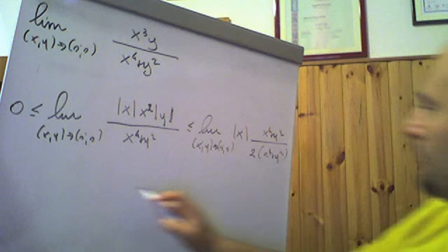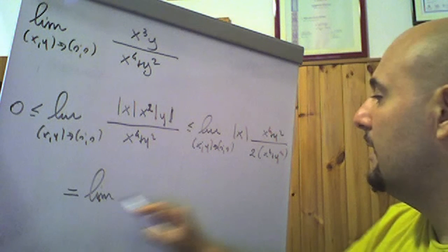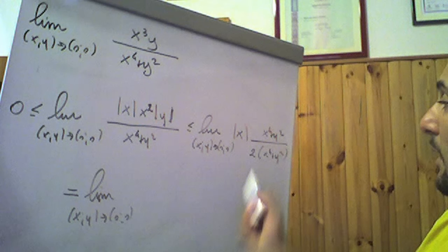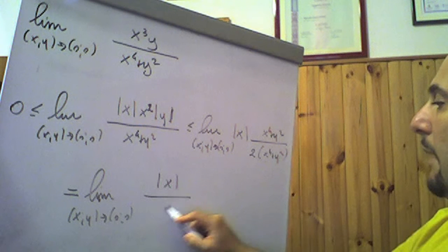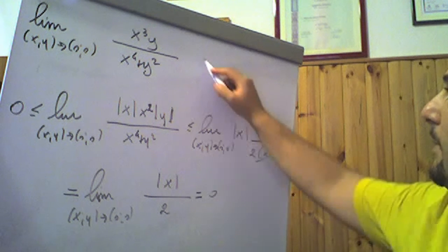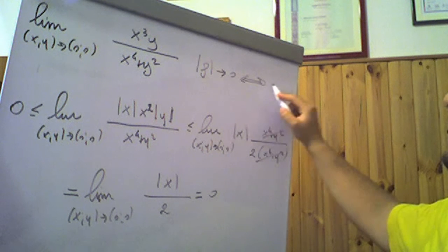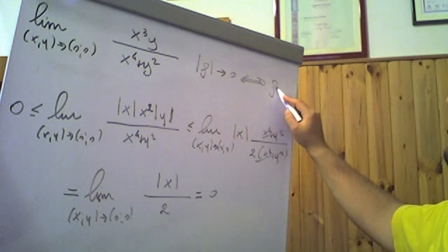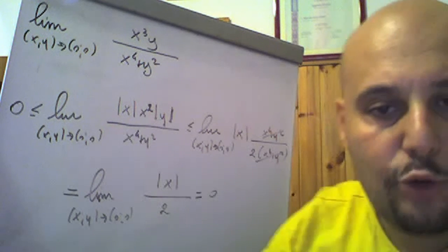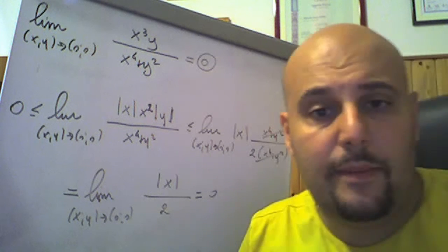So the right-hand side becomes the limit as (x,y) → (0,0) of |x|/2, because the (x⁴ + y²) terms cancel. Clearly this limit equals 0. And since |f| → 0 implies f → 0, we can affirm that this limit is indeed 0. This is another method to arrive at the result of a limit.